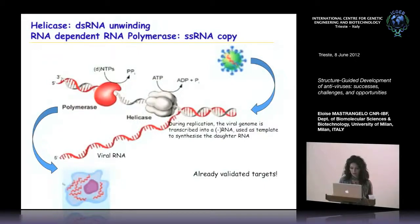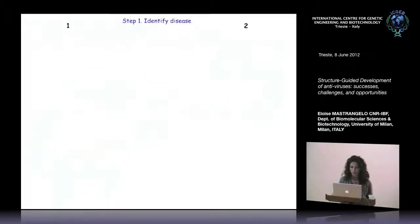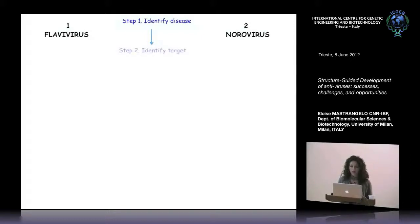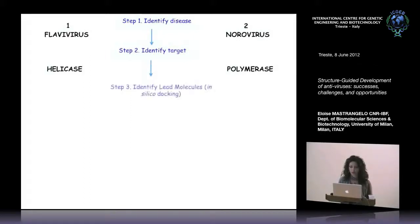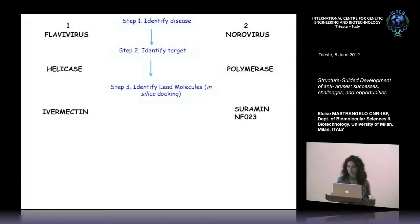These two targets are already validated as important for viral replication. My talk is divided into two parts: the first on Flavivirus and the second on Norovirus. We identified the helicase as target for Flavivirus and the polymerase for Norovirus, and performed in silico docking to identify lead molecules — ivermectin for Flavivirus, and suramine and NF23 for Norovirus.